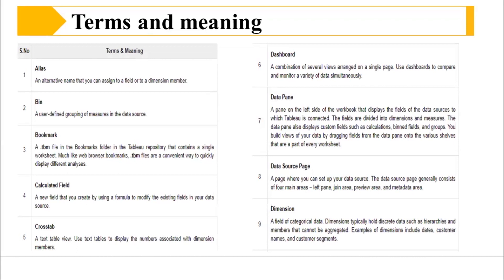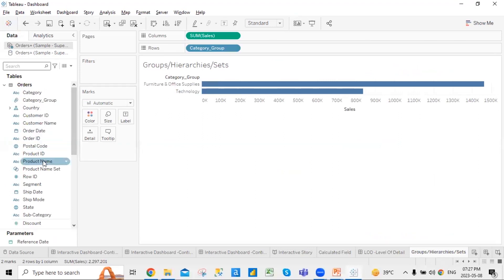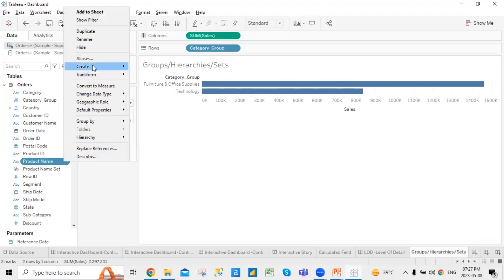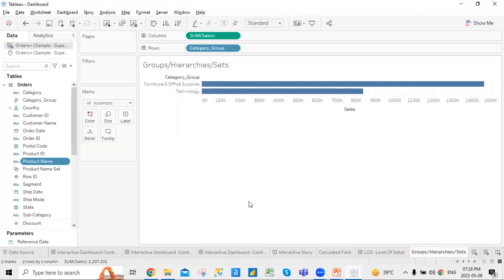There are some terms and meanings you should know when you start working with Tableau. First is an alias — an alternative name that you assign to a field. Whenever you insert or select data into the table, whatever column names exist in your Excel or data source will appear in Tableau as well. But if you want to give a column a different name — for example, rename product name to just name — you can change the alias. Alias means you can change the name of any column.